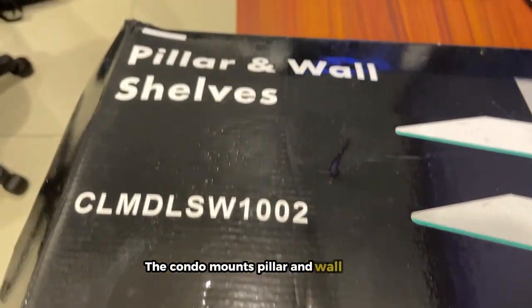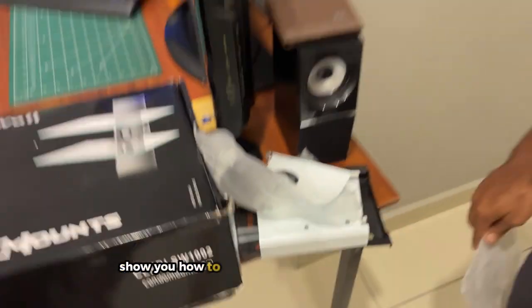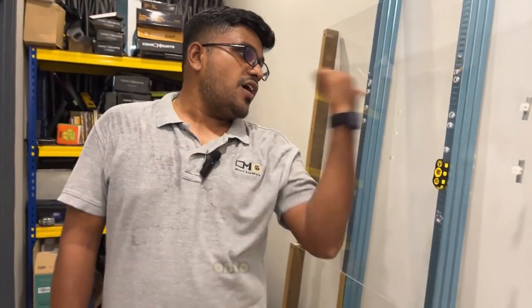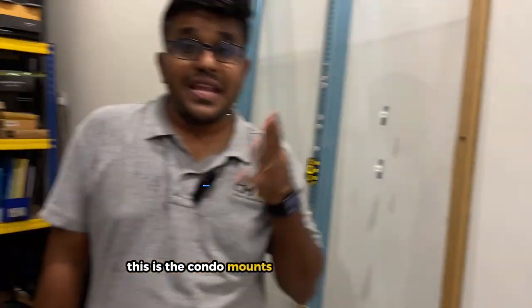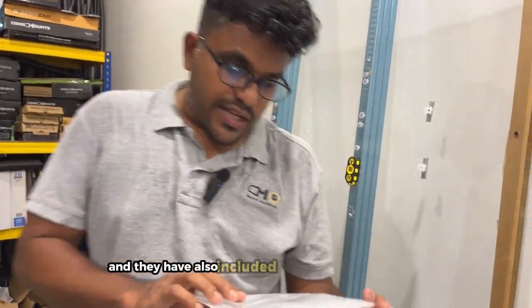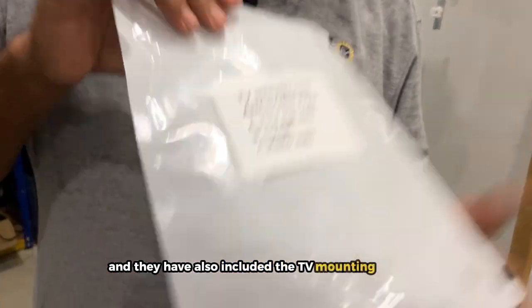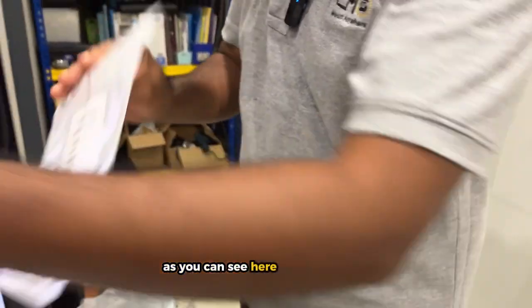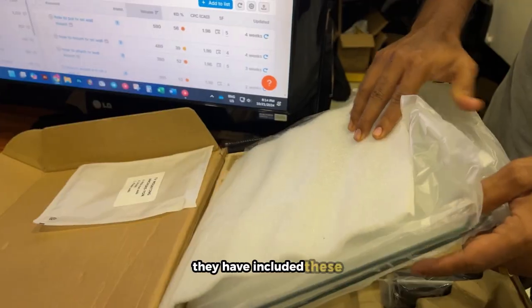The Condo Mounts pillar and wall shelves - today I'm going to show you how to place this pillar and wall shelves onto the drywall. This is the Condo Mounts pillar and wall shelves and they have also included the TV mounting anchors. As you can see here in this set, they have included these anchors to enable you to mount this unit right to your drywall.